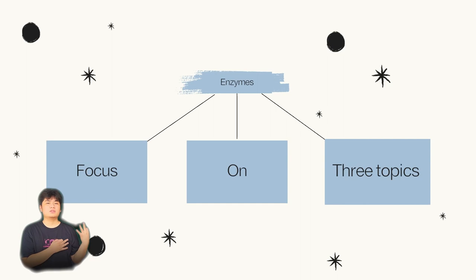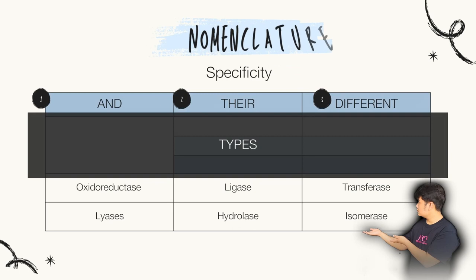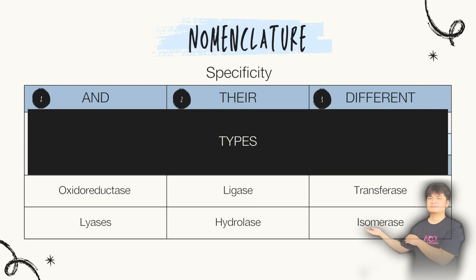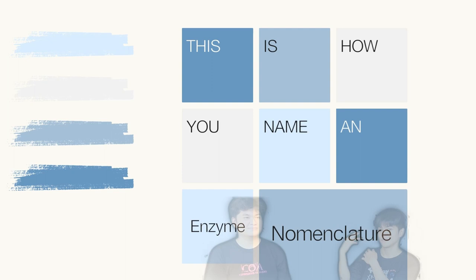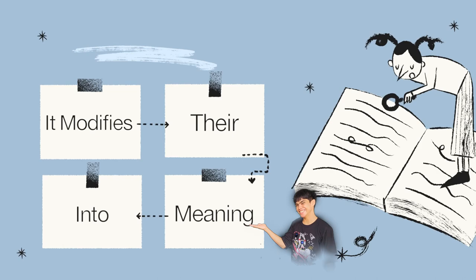So let's focus on the three things you need to know for enzymes: nomenclature, specificity, and their differing lines. This is how you name them — enzyme nomenclature refers to the substrate it modifies, giving meaning into enzyme names.